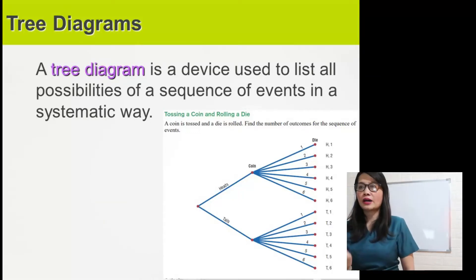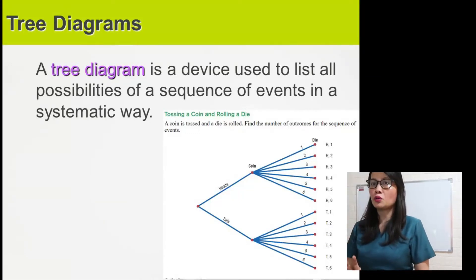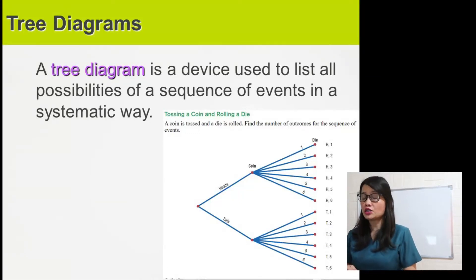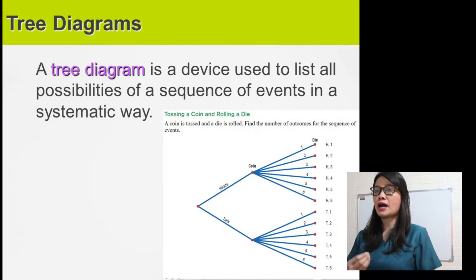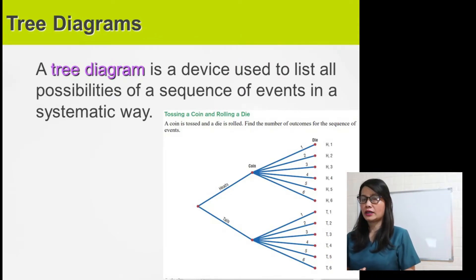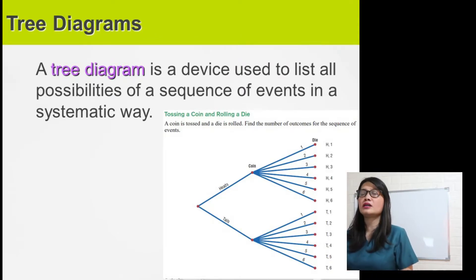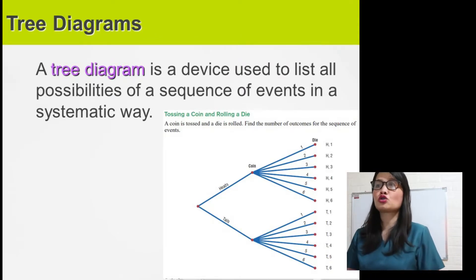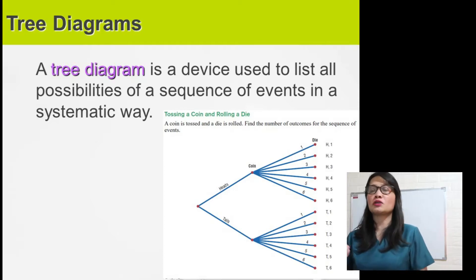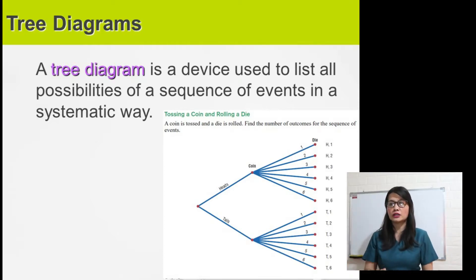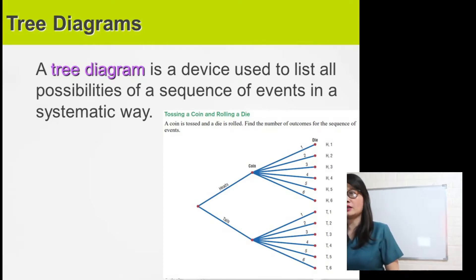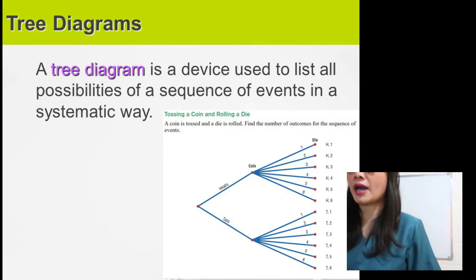A tree diagram is a device used to list all the possibilities of a sequence of events in a systematic way.